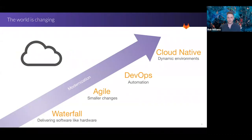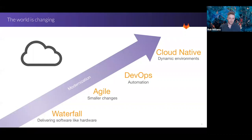This is where companies really start to become cloud native. When your development team can make small code changes and work with operations to dynamically provision infrastructure, enabling automatic tests and deployment, you start to see exponential increases in the amount of changes teams can implement. We had waterfall as the standard — sequential and long build cycles — then agile with smaller, faster changes.